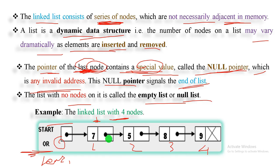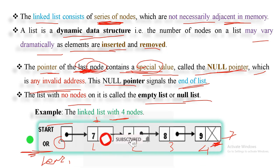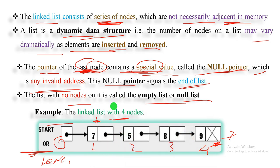The link field stores a specific address — a memory location. The next node can be accessed via the link field in the current node. If you notice the last link, it points to null, indicating the end of the list. These nodes hold multiple pieces of information in their fields. If you like this video, please subscribe to our channel and share the video.